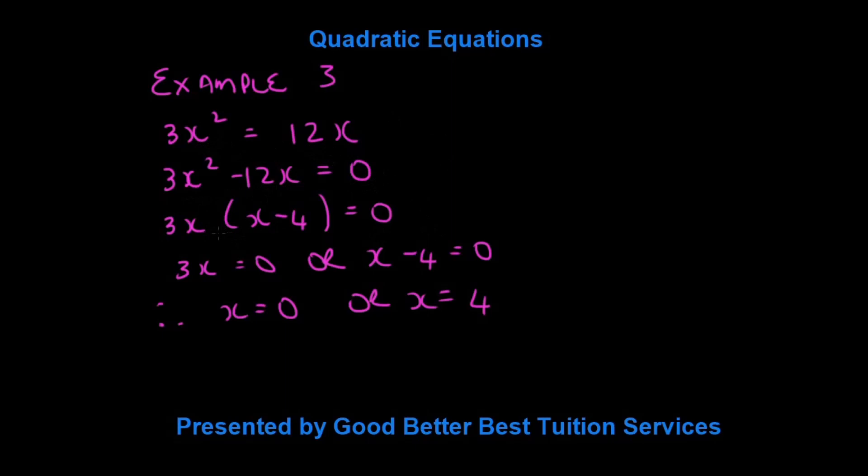And we take out the common factor. The common factor is 3x, and we are left with x minus 4 is equal to 0. And now we can say that 3x is equal to 0, or x minus 4 is equal to 0, and therefore x is equal to 0, or x is equal to 4.